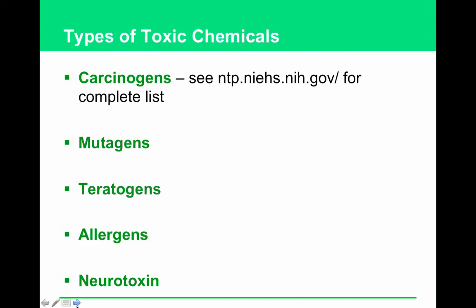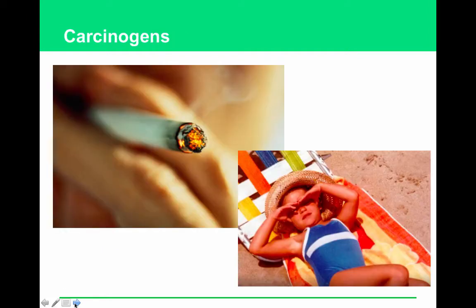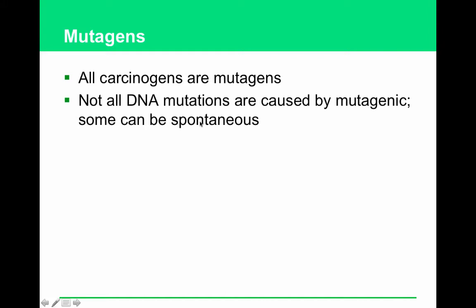Types of toxic chemicals include carcinogens, mutagens, teratogens, allergens, and neurotoxins — these categories can overlap. Carcinogens are chemicals or types of radiation that cause cancer; malignant cells grow uncontrollably, creating tumors that damage body function and often lead to death. Examples include cigarette smoke and sunlight. Mutagens cause mutations in the DNA of organisms — all carcinogens are mutagens, but not all mutagens are carcinogens. Most mutations have little effect because they occur in unused DNA regions, but some lead to severe problems including cancer.